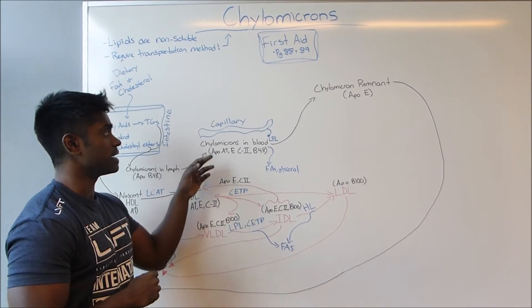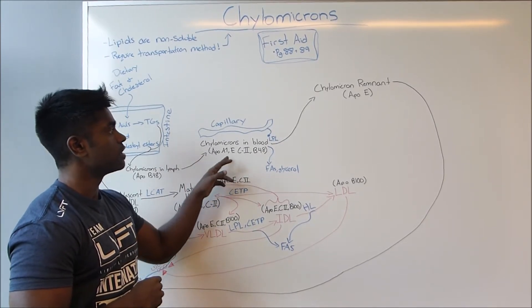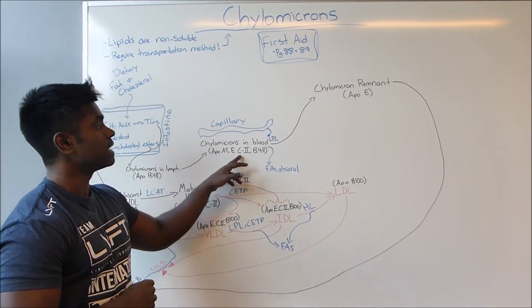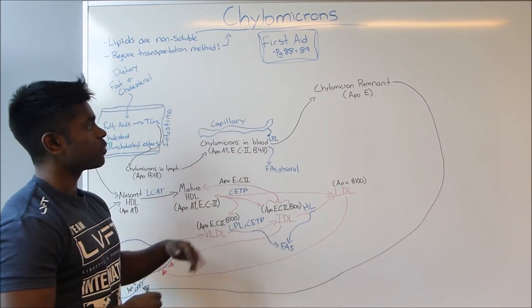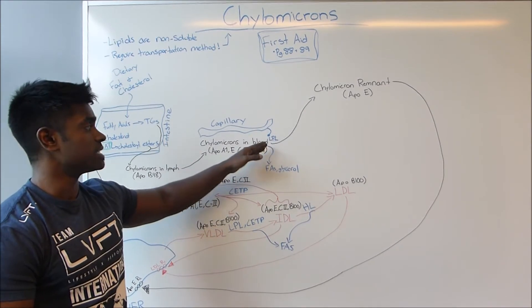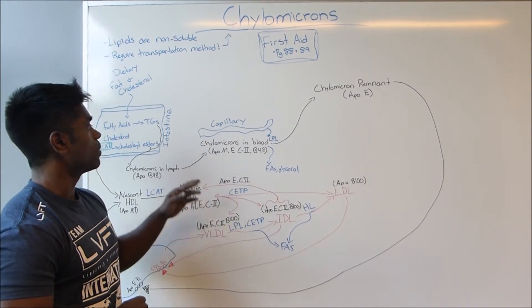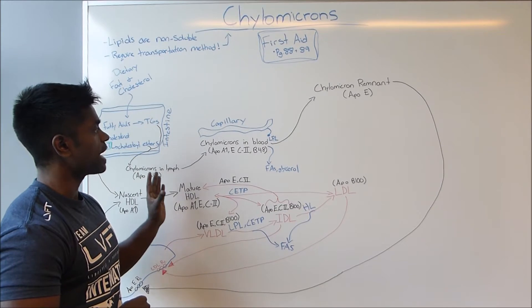In capillaries there's a protein called lipoprotein lipase. Lipoprotein lipase is activated by another apolipoprotein carried on the chylomicrons called ApoC2. I think about C2 with capillary, so once lipoprotein lipase has been activated, this chylomicron can actually be broken down.